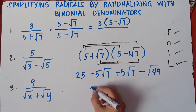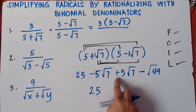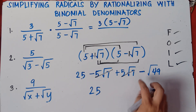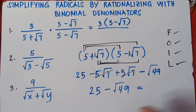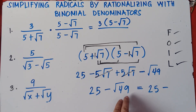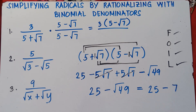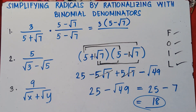Now we simplify. We have 25, then negative 5 square root of 7 and positive 5 square root of 7 — same radicand, unlike signs, so they cancel out to zero. Then minus square root of 49. Square root of 49 equals 7. So 25 minus 7 equals 18. Our denominator becomes 18.